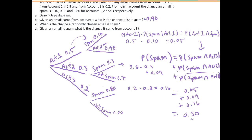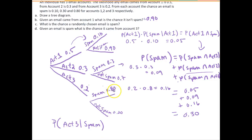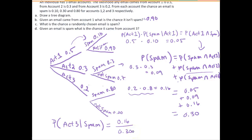Our last question asks: given an email is spam, what is the chance it came from account 3? In notation, that's the probability of account 3 given spam. A common mistake is to say this is 0.80, but that's incorrect because the conditional is flipped — 0.80 is the probability of spam given account 3. We want the probability of account 3 given spam, so our denominator is different. The numerator is the probability of spam and account 3, which we found to be 0.16, and the denominator is the probability of spam, which is 0.30. So the likelihood that a spam email came from account 3 is 0.16 divided by 0.30, equal to 0.53.